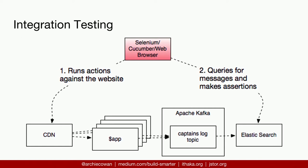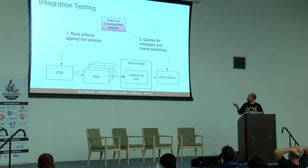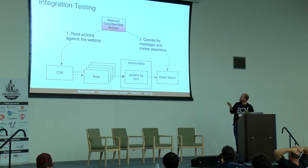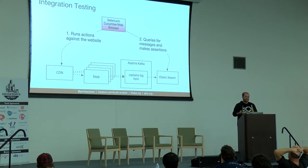Another big issue in this constantly churning environment is knowing that the data you're producing is actually legitimate. In our continuous integration environment, we have an agent running inside a Selenium or Cucumber web browser, running actions against the website and producing messages from our applications. On the other side of Kafka we have Elasticsearch, which allows the test suite to verify that the data being produced matches our schema, has all the desired fields, and isn't missing anything.